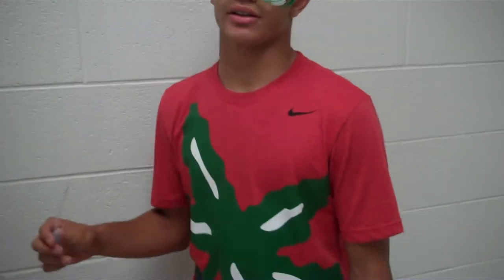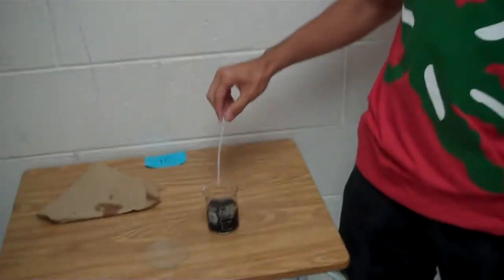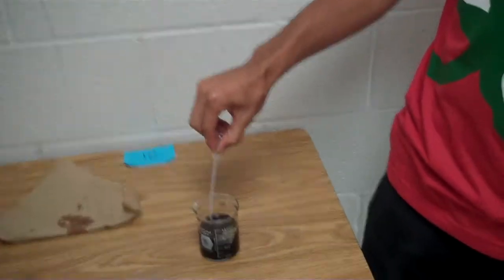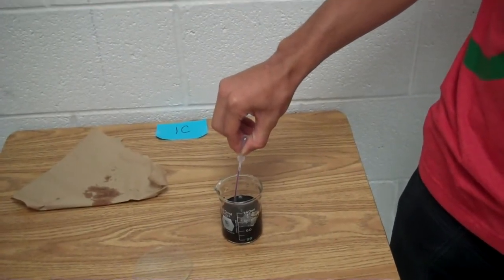To operate the dropping pipette, you squeeze the bulb end of the pipette and put the other end in the liquid. To pull in the liquid, you slowly release the bulb.